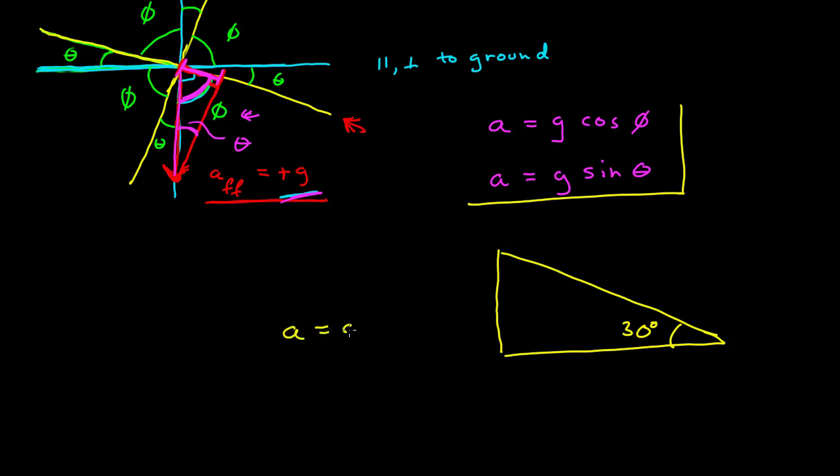What if I'm given this angle, and what if that angle is called theta? If all I have is this equation, and I plug this angle in for theta, I'm going to get the wrong answer. So in this case, if I use this angle, I need to use this expression here. Or I can use this angle to calculate what this angle is, and use g sine theta.